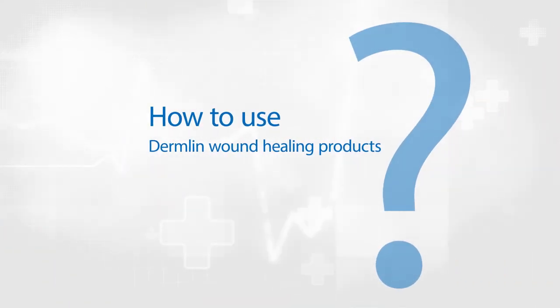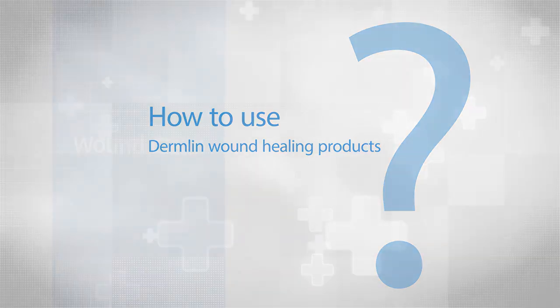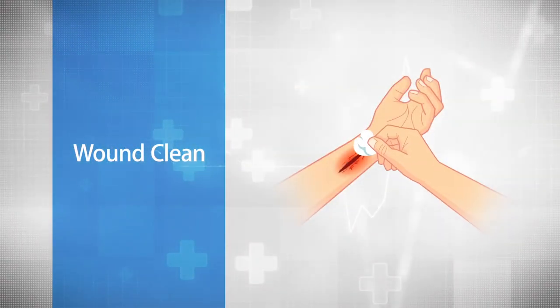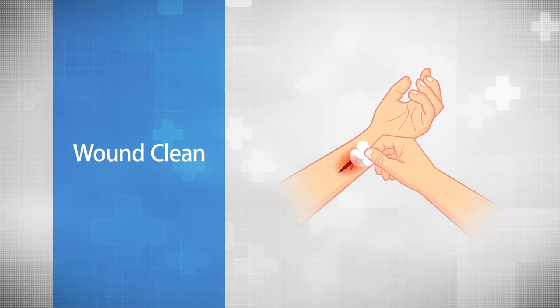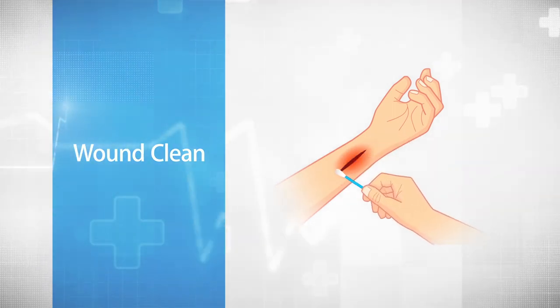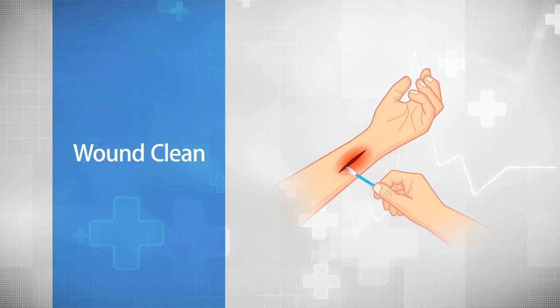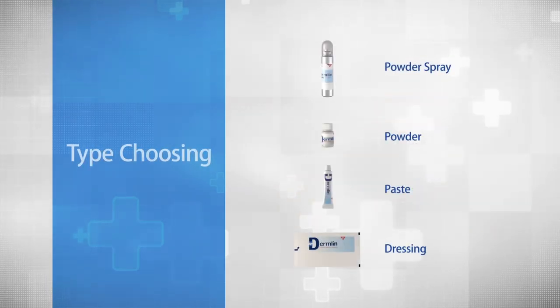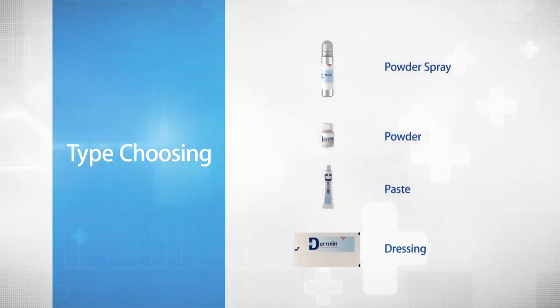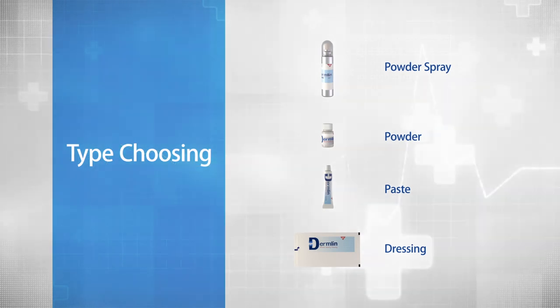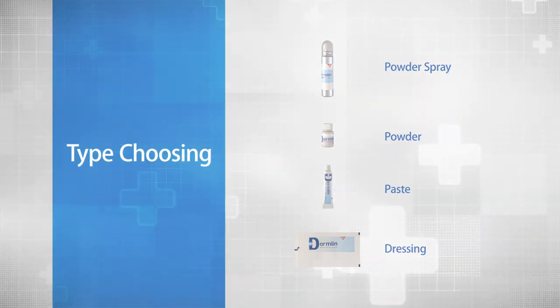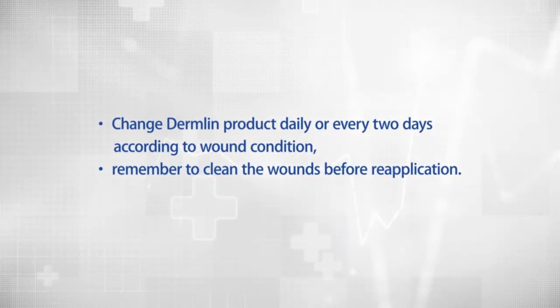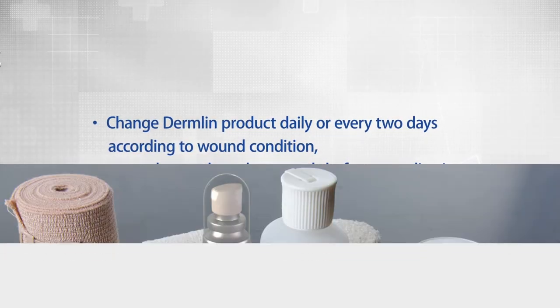Let's learn how to use Dermalyn wound healing products for common skin injuries. Before application, make sure that the skin wound has been completely cleaned, including removing necrotic tissue. After that, choose the suitable Dermalyn product according to wound condition and apply it evenly on the wound surface. Change the Dermalyn product daily or every 2 days according to wound condition, and remember to clean the wounds before reapplication.